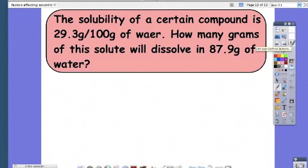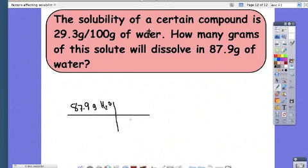All right, last problem. The solubility of a certain compound is 29.3 grams per 100 grams of water. How many grams of the solute will dissolve in 87.9 grams of water? You can set this up using dimensional analysis or a ratio. I'm going to do it with dimensional analysis. So 87.9 grams of water, and using the conversion factor they gave us, for every 100 grams of water, we should be able to dissolve 29.3 grams of our solute. Grams of water cancel out, multiply and divide, and you get 25.8 grams of our solute.